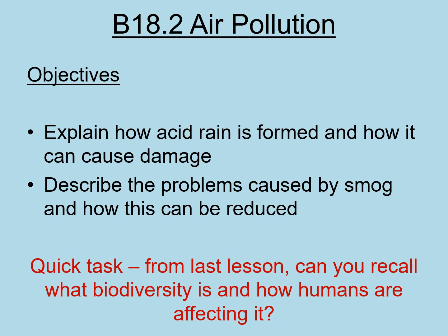Hello everyone, welcome to your second lesson on the B18 chapter which is air pollution. For this lesson we're going to be looking at explaining how acid rain is formed and how it can cause damage. You also need to be able to describe the problems caused by smog and how this can be reduced.